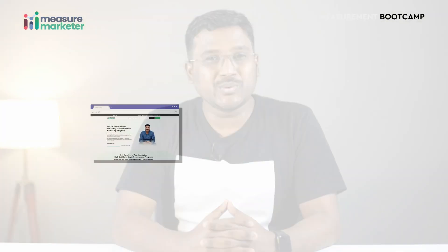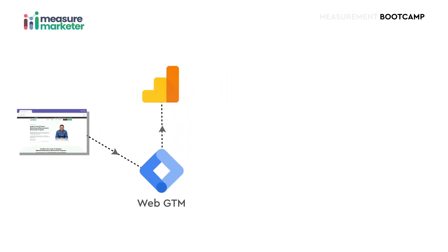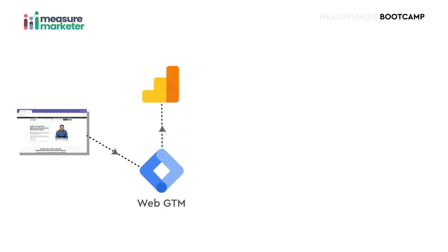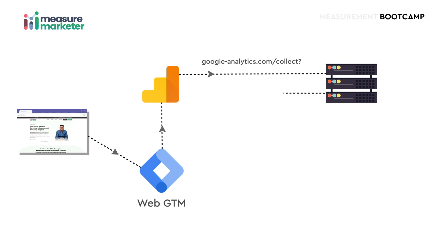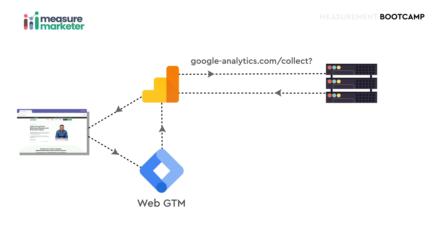Whenever people visit your website, your browser makes a request to Google Tag Manager, and Google Tag Manager loads the Google Analytics tag. When the Google Analytics tag loads, it makes a request to Google Analytics servers, which are located at google-analytics.com/collect — that is the endpoint.